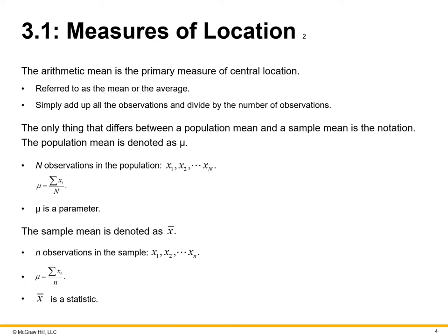The first measurement we're going to look at is the mean. The arithmetic mean is the primary measure of central location, often referred to as the average — adding up all the observations and dividing by the total number of observations. A population mean is denoted as mu (μ), which is a parameter, while the sample mean is denoted as x-bar and is a statistic. Overall, you're still trying to find the average in a data set.